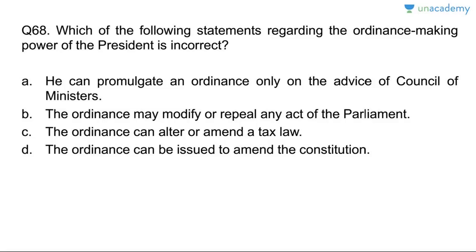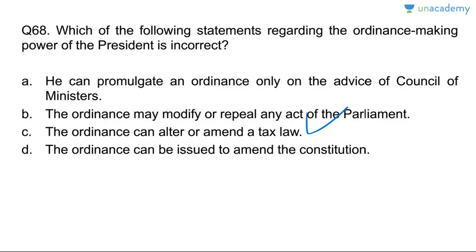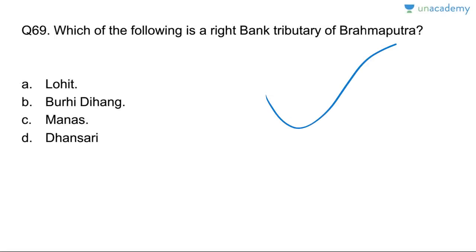Question sixty-eight: which statement about the ordinance-making power of the President is incorrect? He can promulgate an ordinance only on the advice of the Council of Ministers — correct. An ordinance may modify or repeal any Act of Parliament — correct. An ordinance can alter or amend a tax law — correct. An ordinance can be issued to amend the Constitution — no, an ordinance cannot amend the Constitution. Answer is D.